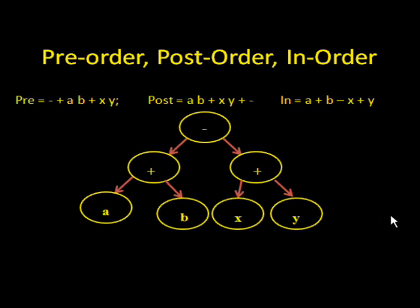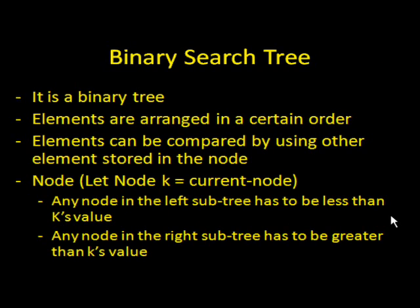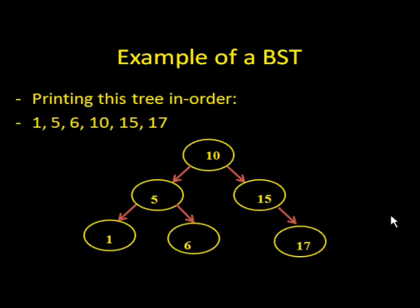You can insert brackets around each left and right node of what you're calculating. Now we are going to talk about binary search trees. That's a binary tree where the elements stored in each node are arranged in order — numerical order if they are numbers, or alphabetical order if they're letters or words. Each element is compared to each other using the elements stored in the node. Here's an example: if we were to print this tree in order, you would get 1, 5, 6, 10, 15, and 17 — so you can see that this list is in order if we use in-order traversal.